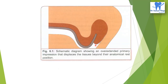This schematic diagram shows an overextended primary impression that displaces the tissues beyond the anatomical rest position. When making a primary impression using high rigid, high fusing material like impression compound, the soft tissues in the palate and in the sulcus usually get displaced, resulting in an overextended impression. If we fabricate the denture using this impression, we may end up with one having overextended borders.